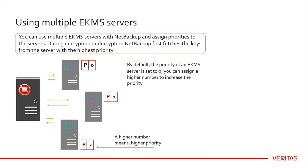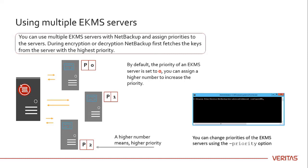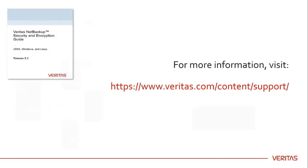You can assign or update priorities to the eKMS servers using the command prompt. You can change priorities of the eKMS servers using the priority option. For detailed information on configuring an eKMS server, visit our support site and refer to the Veritas NetBackup Security and Encryption Guide.